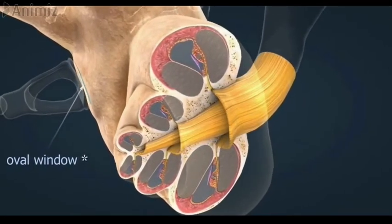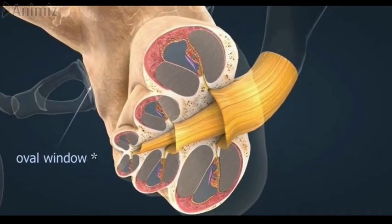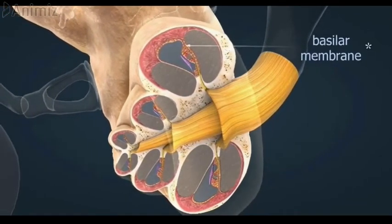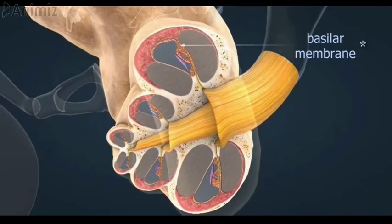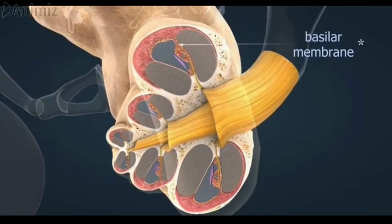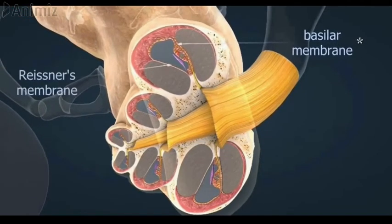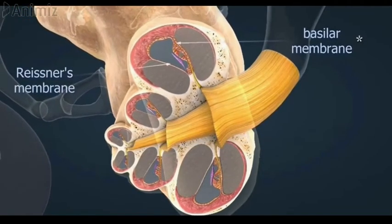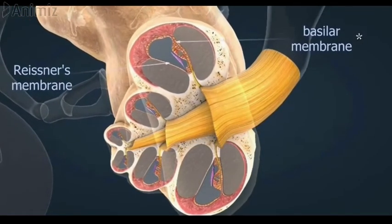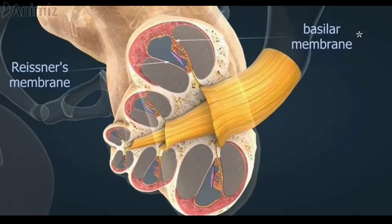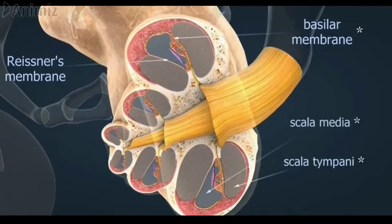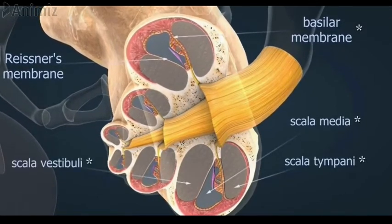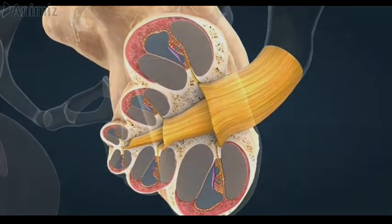Remarkably, the hair cells in the cochlea are tuned to respond to different sounds based on their pitch or frequency. High-pitched sounds will stimulate hair cells in the lower part of the cochlea and low-pitched sounds in the upper part of the cochlea.